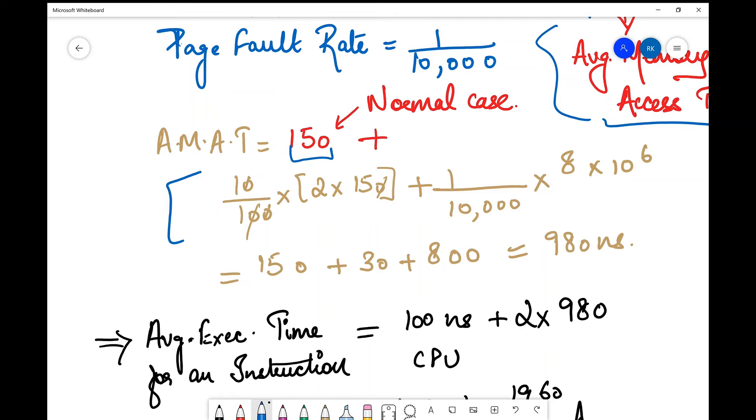In 10 percent of cases, I have to put twice the memory access time. This memory access time comprises TLB access time as well—they haven't specified in the question, so we assume it's included. I write 10 percent of 2 into 150. Why twice? You can find that in my previous videos in the same playlist. Then I add page faults: 1 by 10,000 into 8 times 10 to power 6 nanoseconds.